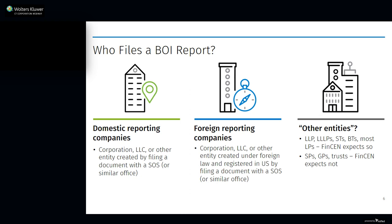We know that corporations and LLCs are included in the definition of reporting companies, but what other entities are included? The final rule does not list what other entities would be considered a reporting company. However, FinCEN has indicated that it expects this would include limited liability partnerships, limited liability limited partnerships, business trusts, statutory trusts, and most limited partnerships, because they are created by filing a document with the state. FinCEN has also indicated that sole proprietorships, general partnerships, and most trusts would not be considered reporting companies because they are not created by filing a document with the state.